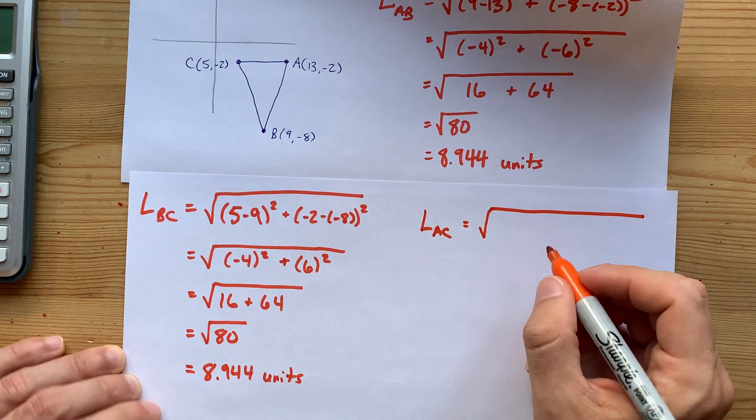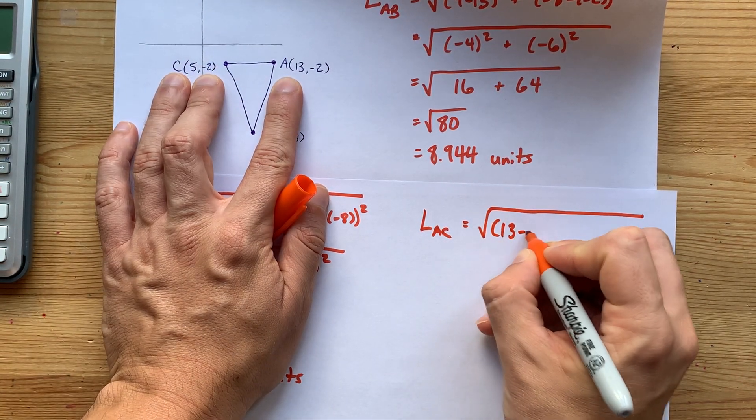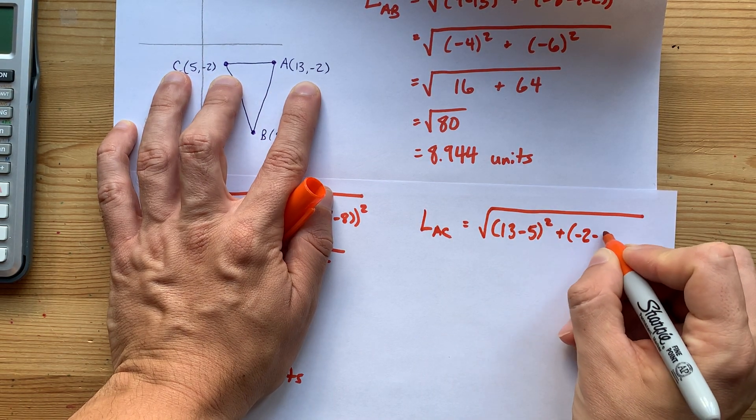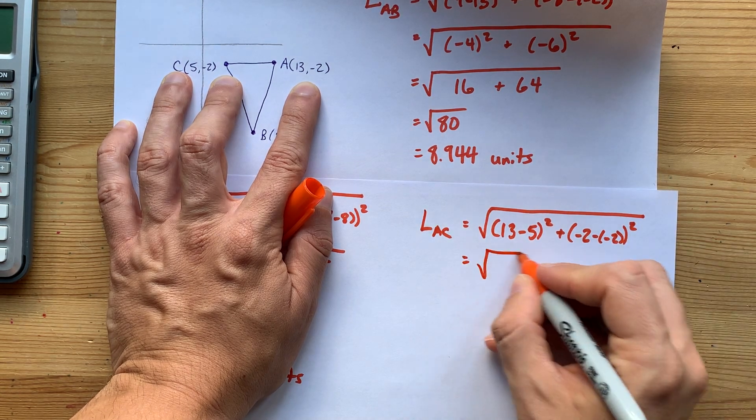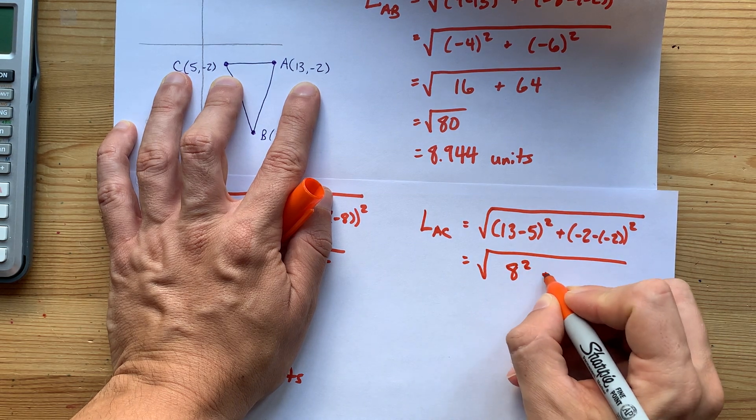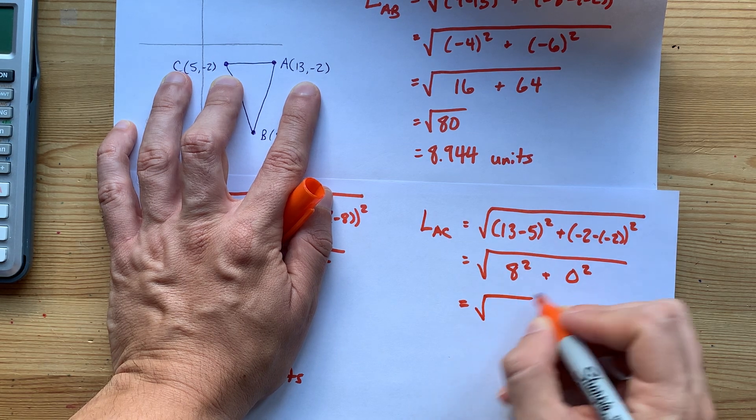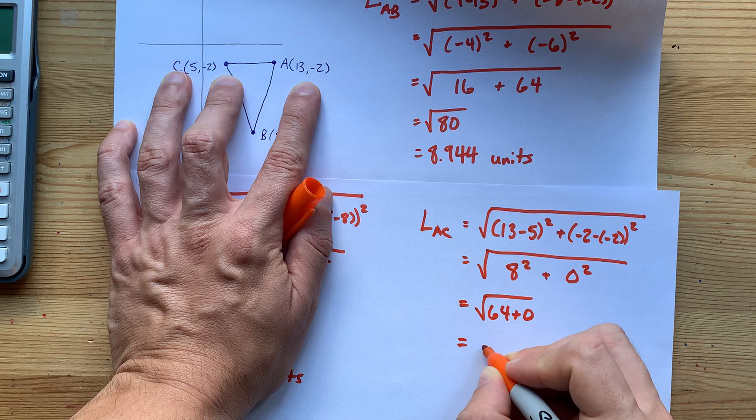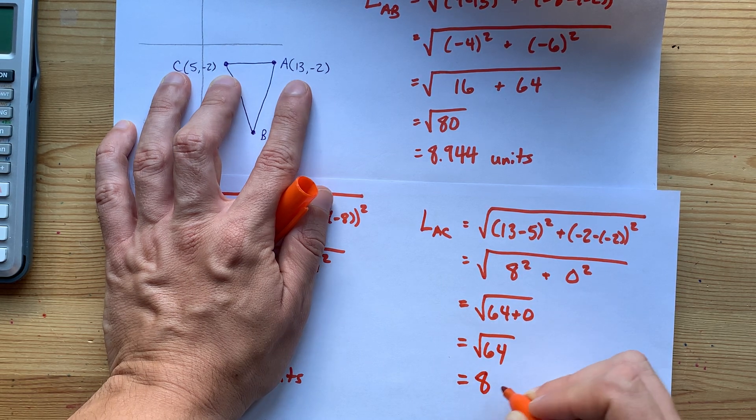Square root of A to C. We've got 13 minus 5 for our x's, and we've got -2 minus -2 for our y's. These numbers are much different. 13 minus 5 is 8. Negative 2 plus 2 is 0. Oh, I see. It's the square root of 64, which itself is 8. That is not the same.